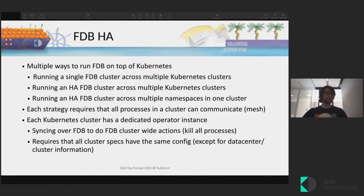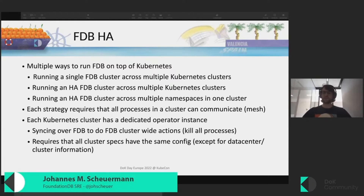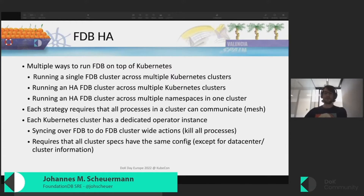The operator supports multiple different ways to run FoundationDB on Kubernetes — for example, across multiple Kubernetes clusters, across multiple namespaces, or across multiple Kubernetes clusters in an active-active (AHA) configuration. Each configuration requires that all processes can communicate with each other, so you need mesh communication. Each Kubernetes cluster has a dedicated operator, and those operators synchronize over FoundationDB itself by writing to a specific key-value space.